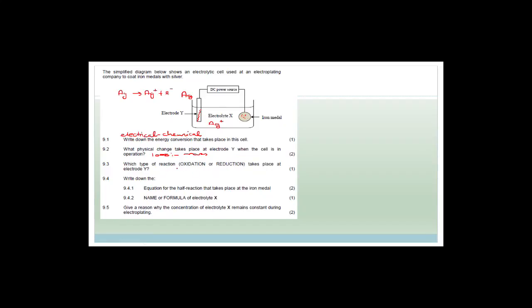What type of reaction — oxidation or reduction — takes place at electrode Y? We've already said we're going from Ag to Ag⁺ plus an electron. Using OIL RIG, oxidation is the loss of electrons, so this is obviously oxidation. We also know that oxidation occurs at the anode, so in this case Y is the anode, and the iron metal side will be the cathode.